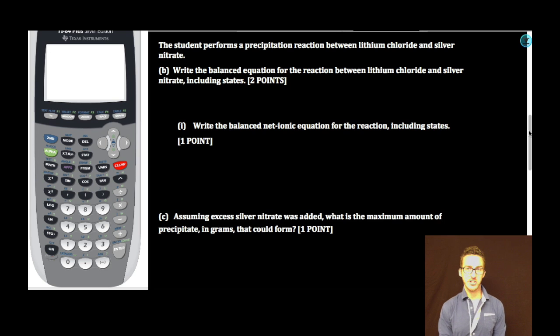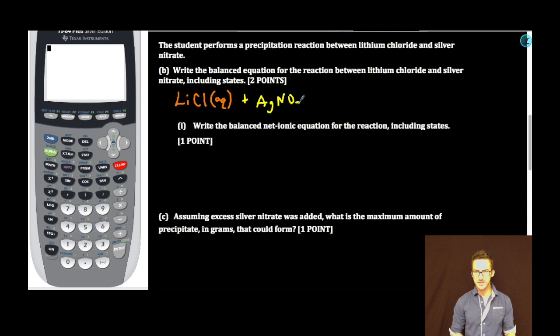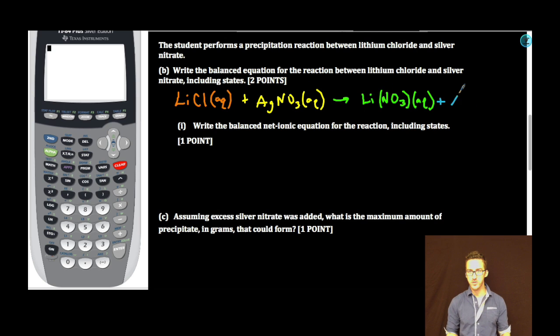The student performs a precipitation reaction between lithium chloride and silver nitrate. Part B. Write the balanced equation for the reaction between lithium chloride and silver nitrate, including states. Whew. Okay, nomenclature to the rescue here. Lithium chloride aqueous plus silver nitrate aqueous, forming—it's a precipitation reaction, which is, remember, an example of a double replacement reaction. We're going to get some lithium nitrate, also aqueous, because remember that nitrate always is going to form an aqueous salt, which means that our precipitate is going to be the silver chloride, aka solid. How nice is that? Everything's balanced with coefficients of one. Done. Boom.